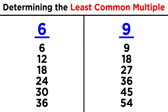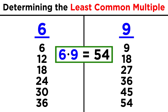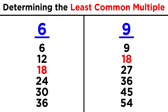Take six and nine. Six times nine is fifty-four. But if we write out the multiples for both numbers, we find that already at eighteen we get the least common multiple. So when looking at smaller numbers, it is a good idea to write out the multiples to find the answer.